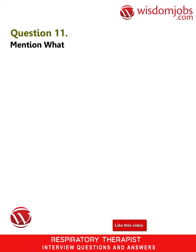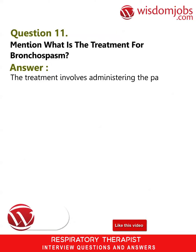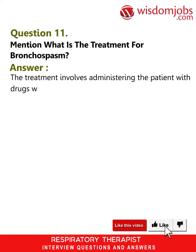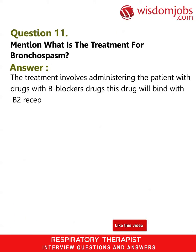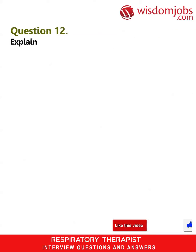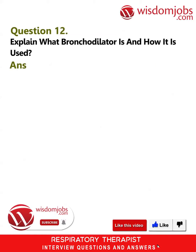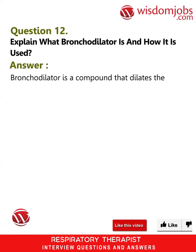Question 11: Mention what is the treatment for bronchospasm. Answer: The treatment involves administering the patient with beta blocker drugs. This drug will bind with beta-2 receptors and block the action of norepinephrine and epinephrine, which causes the shortness of breath.